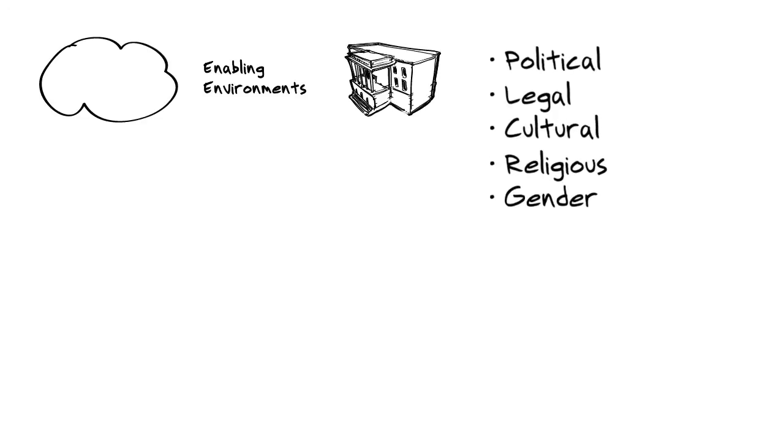We can think about context analysis as having four dominant features. The first feature is the enabling environment. Think about the backdrop against which innovation occurs. The political and legal aspects, cultural, religious, gender, infrastructure. Think about the market and the business conditions that shape that environment in which innovation occurs.